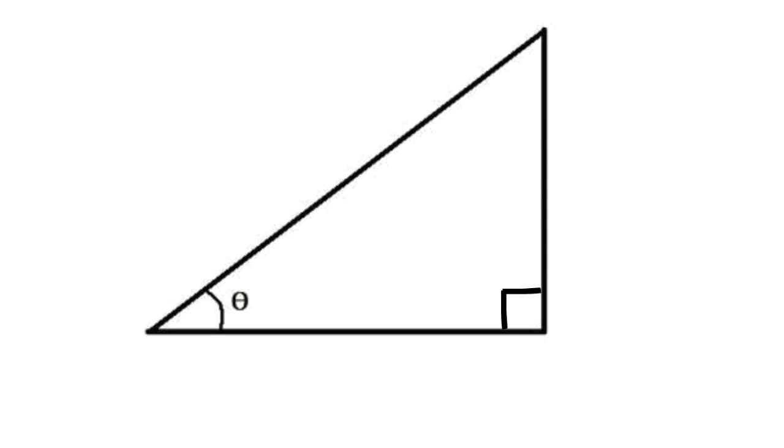To begin this study, we identify one angle of a right triangle as the variable theta. Using theta as our reference point, we then label the two legs of the triangle as the sides opposite from and adjacent to theta.